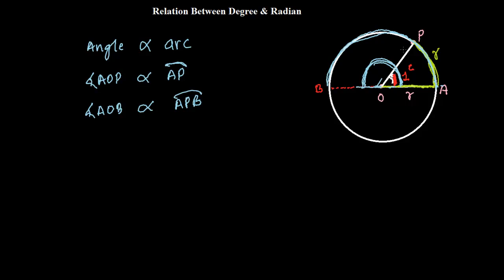And angle AOP is proportional to the arc AP. So, if we combine this together then we can remove this proportionality. And what we can say that angle AOP over angle AOB is equal with arc AP over arc APB.